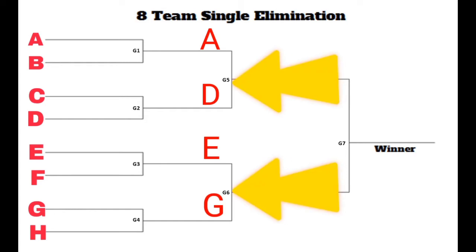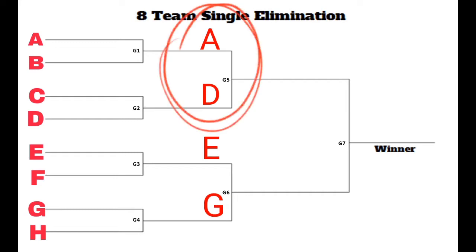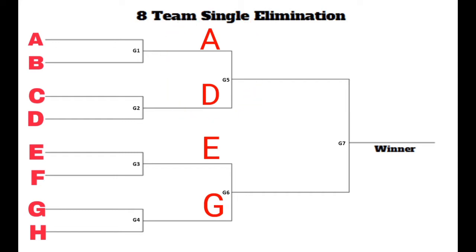Now we have our new set of players for the second round. For the fifth game, Team A versus Team D — the winners from Round 1 — compete in Round 2. Let's say A won and Team D loses. For the sixth game, Team E versus Team G — let's say Team E won. Now for the third round, the final, we have Team A versus Team E. Let's say Team E won against Team A, making Team E our champion.